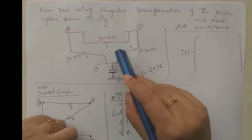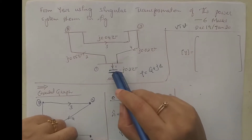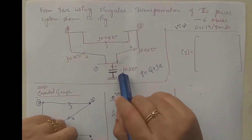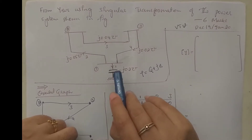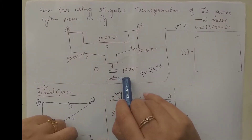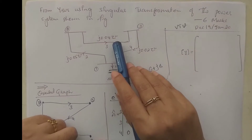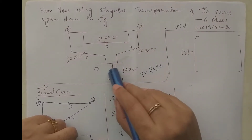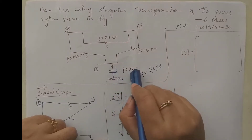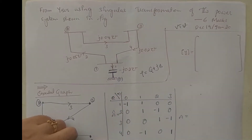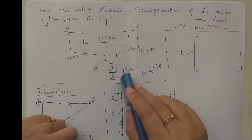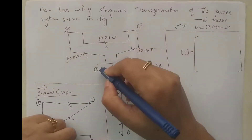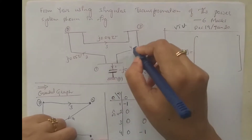How is this network different from other problems? Here we have a susceptance along with other admittance values — a capacitive susceptance. The unit of admittance is mho, and the unit of susceptance is also mho. But it is grounded. Here the directions of elements are given and element numbers are also given.